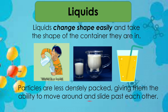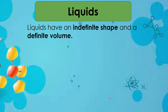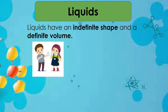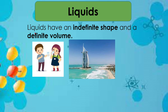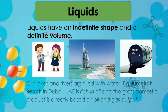The less dense packing gives particles the ability to move around and slide past each other. Liquids have an indefinite shape and a definite volume. A liquid will take the shape of whatever container it is in. Examples in the liquid state: water in a glass, lakes and rivers. Jumeirah Beach in Dubai is an example. Oil is also a liquid, and the UAE is rich in oil.